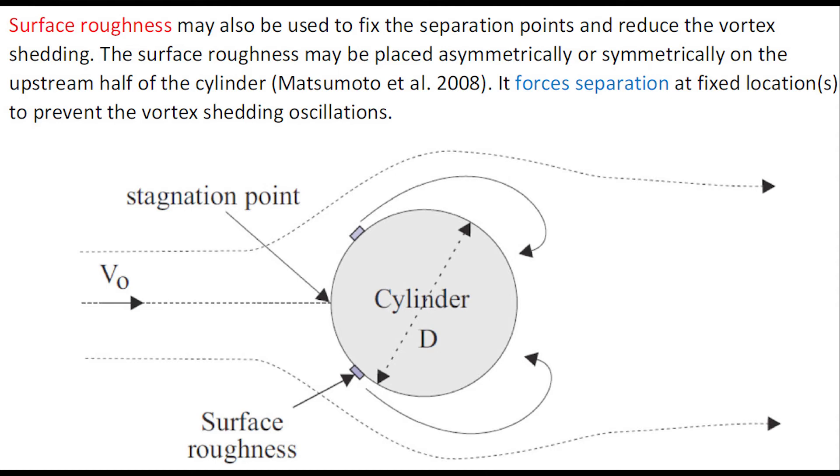Surface roughness may also be used to fix the separation points and reduce the vortex shedding. The surface roughness may be placed asymmetrically or symmetrically on the upper half of the cylinder. It forces separation at a fixed location to prevent the vortex shedding oscillation.